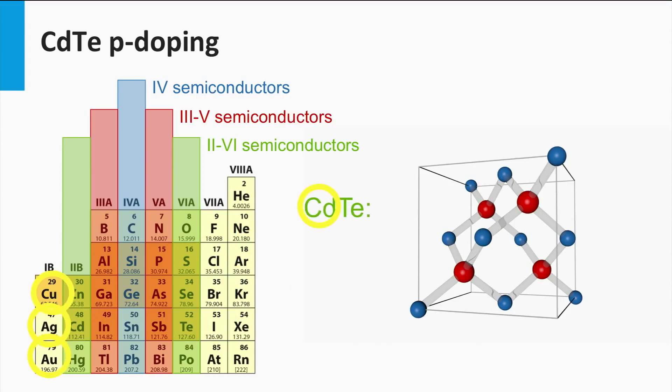P-doping of cadmium telluride can be achieved by replacing the two valence atom cadmium with a one valence electron atom like copper, silver or gold. These elements act as a shallow acceptor.